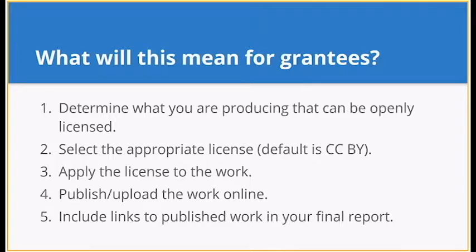While this presentation is focused on applicants, we want to give insight into what this means once you've accepted a grant. First, you'll need to look at what you're producing — reports, scripts, videos, processes, budgets — and determine what is possible and beneficial to openly license. This may mean breaking up some of your work so that just a part of it is openly licensed and publicly shared. Then you'll select a license, apply it to the material, and publish and upload the work online. You'll be asked to include links to published work in your final report. Vancouver Foundation will direct you to additional resources to help choose the appropriate license and to places that make sense for you to publish your materials online.